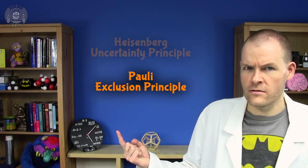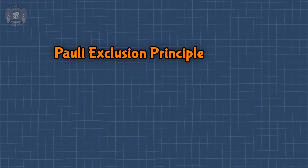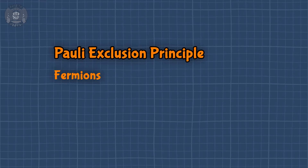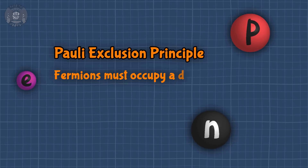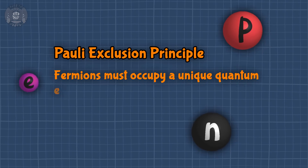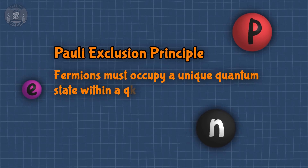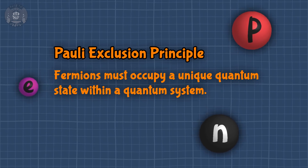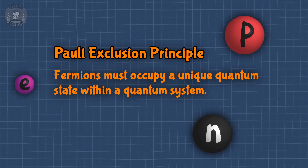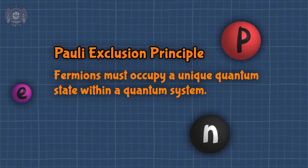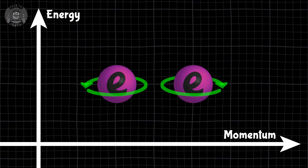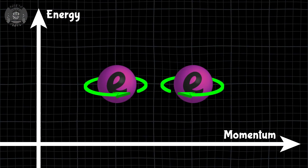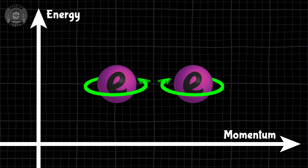The Pauli Exclusion Principle states that fermions — like electrons, protons, and neutrons — must occupy a unique quantum state. In other words, you can't have more than one in the same state. If they have the same energy, then they must have different momenta or spin orientations or something.